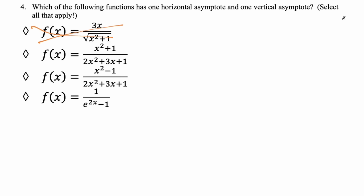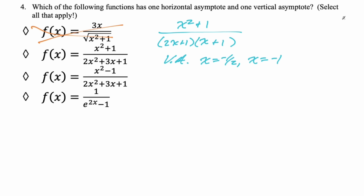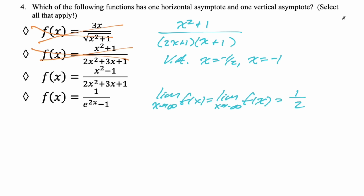For the next function, I factor the denominator and find vertical asymptotes at x = -1/2 and x = -1. That's two vertical asymptotes, so this cannot be our answer. However, taking the limit to ±∞ gives the same answer of 1/2, so there's only one horizontal asymptote. You definitely need to consider both positive and negative infinity for horizontal asymptotes, and look for zeros of the denominator that don't cancel for vertical asymptotes.